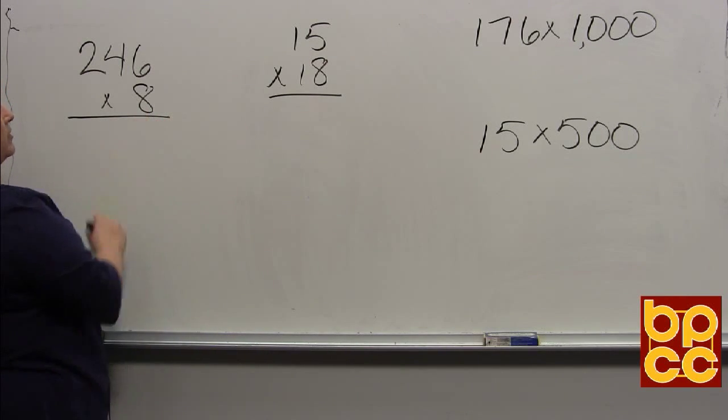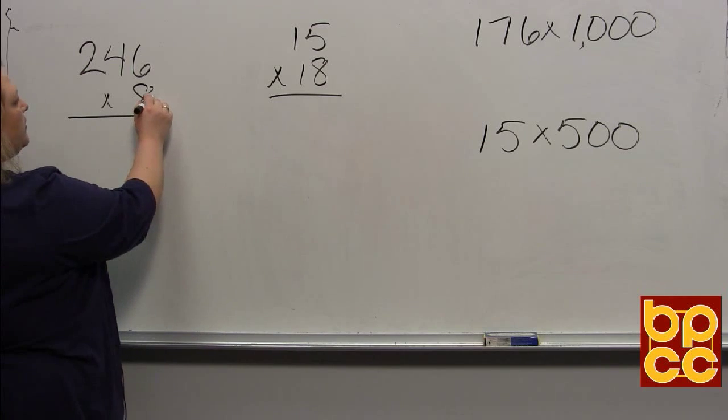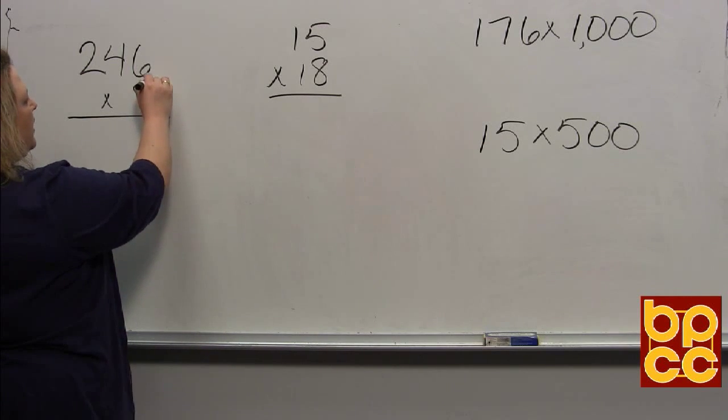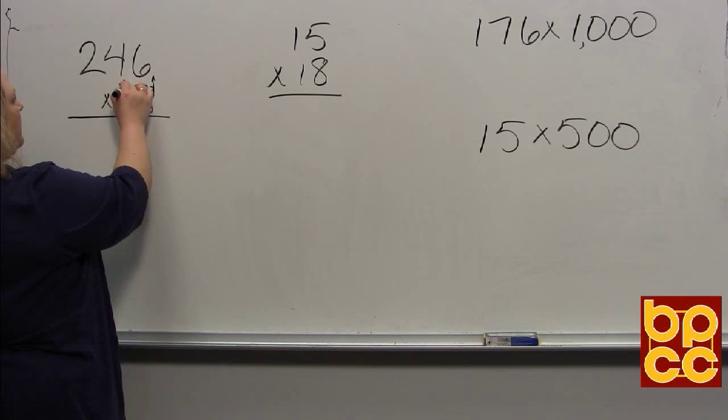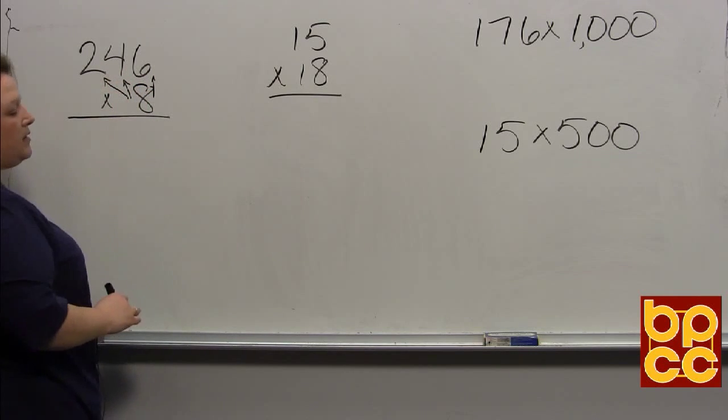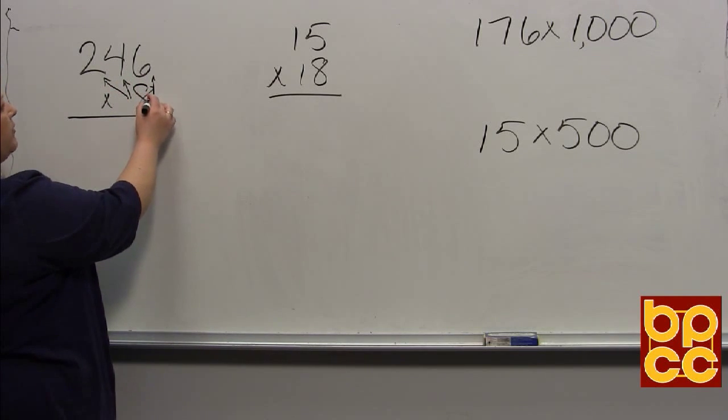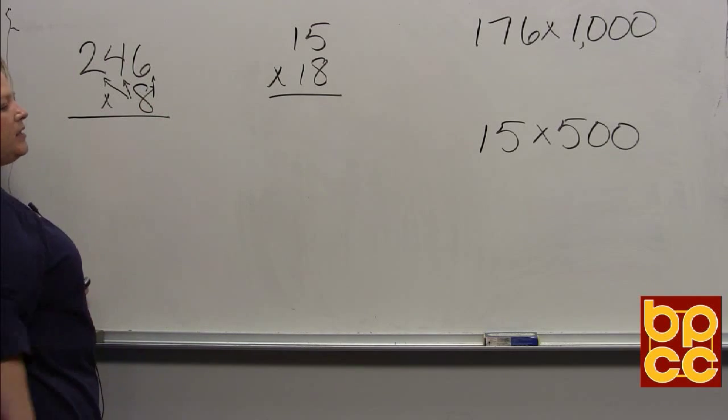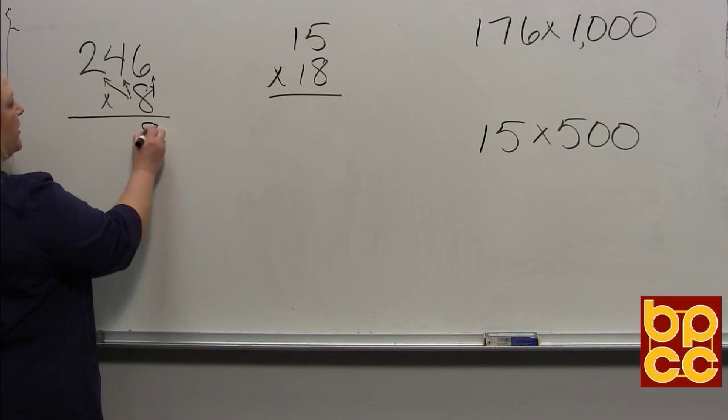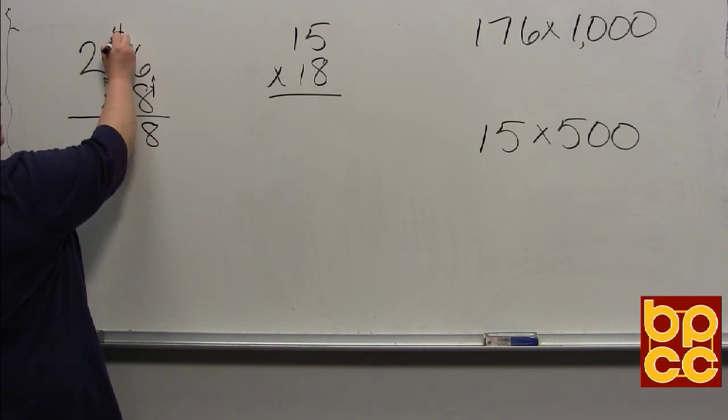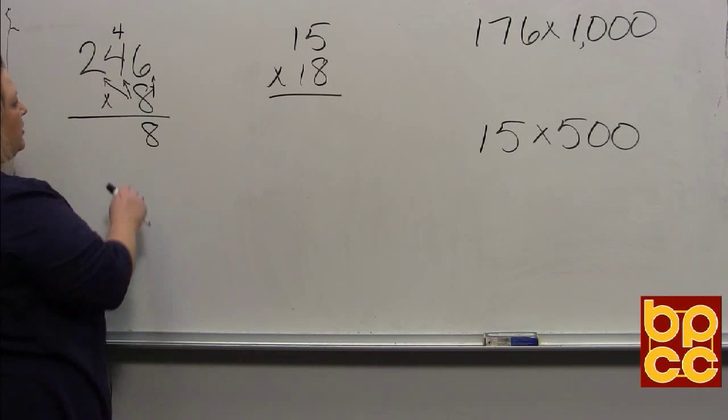When you do this, you always start with the number on the bottom and multiply times every digit that is above it. So first we want to do 8 times 6. Well, 8 times 6 is 48. We put the ones place down and carry the tens place to the next digit.